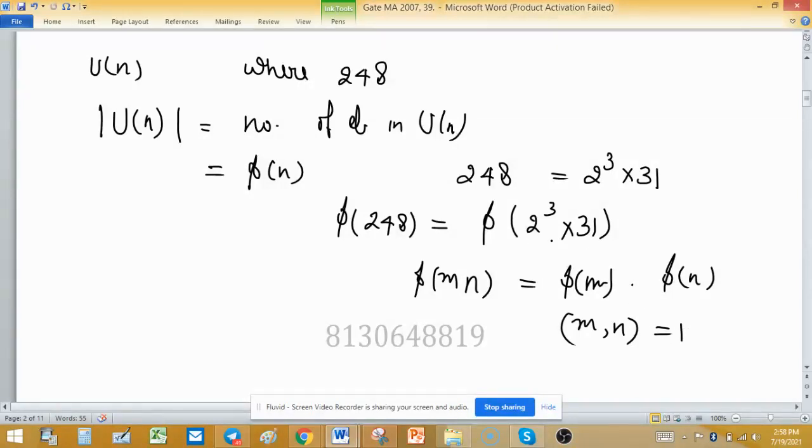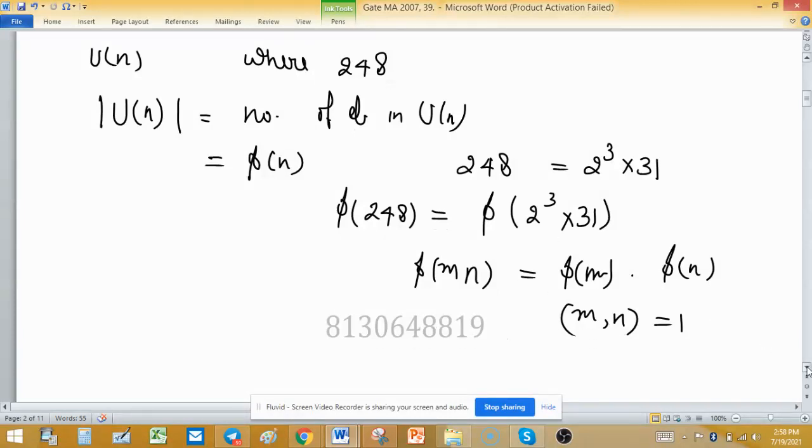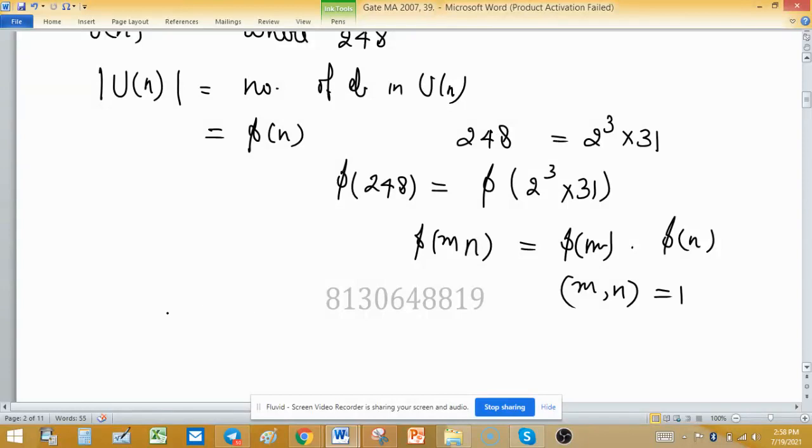So φ(248) is equal to 248 × (1 - 1/2) × (1 - 1/31), so 248 × 1/2 × 30/31.